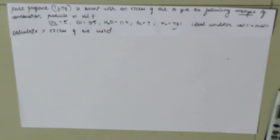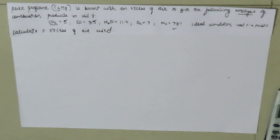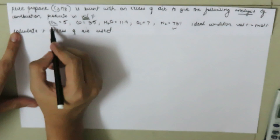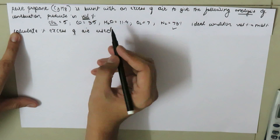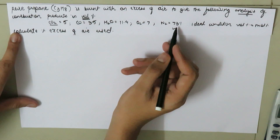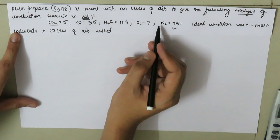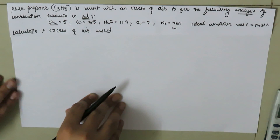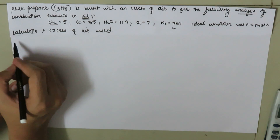Today we are going to work out a problem based on the calculation of the percentage excess of air. Pure propane, C3H8, is burnt with an excess of air. The product composition in volume percent is: CO2 = 5%, CO = 3.5%, H2O = 11.4%, O2 = 7%, and N2 = 73.1%. Assuming ideal gases, volume percent equals mole percent. We need to calculate the percentage excess of air used.